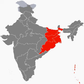East India is a region of India consisting of the Indian states of Bihar, Jharkhand, West Bengal, Odisha and the Union Territory Andaman and Nicobar Islands. West Bengal's capital Kolkata is the largest city of this region. The Kolkata metropolitan area is the country's third largest. The state of West Bengal shares many cultural and linguistic characteristics with Bangladesh. Together with Bangladesh, West Bengal formed the ethno-linguistic region of Bengal before partition in 1947.